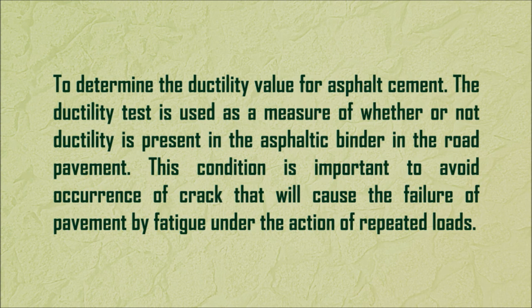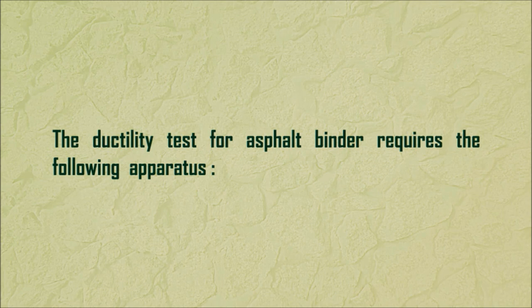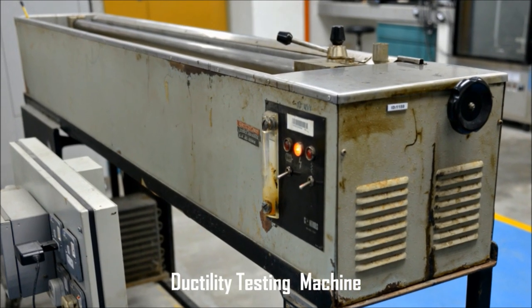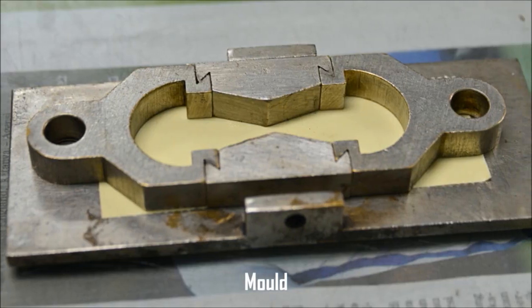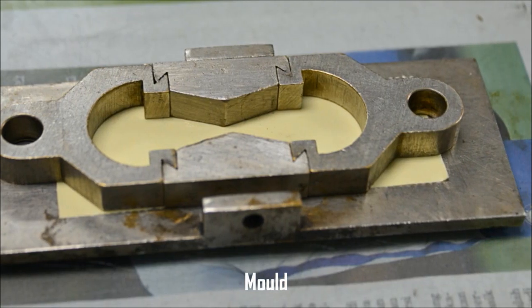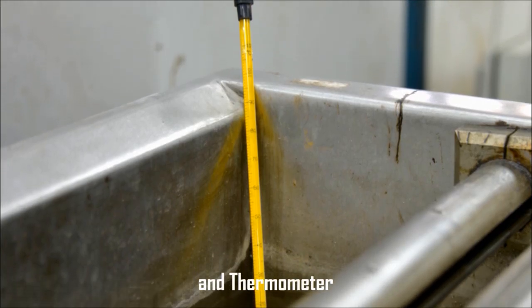This condition is important to avoid occurrence of cracks that will cause the failure of pavement by fatigue under the action of repeated loads. The ductility test for asphalt binder requires the following apparatus: ductility testing machine, mold, and thermometer.